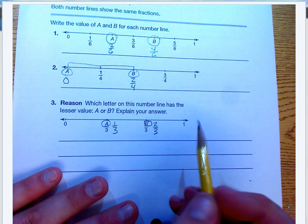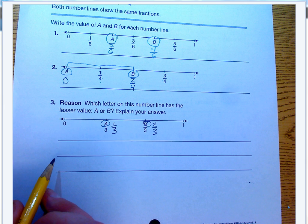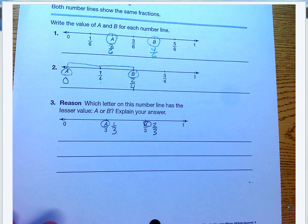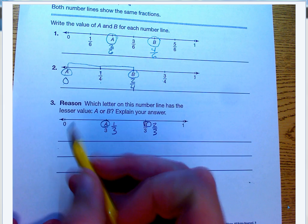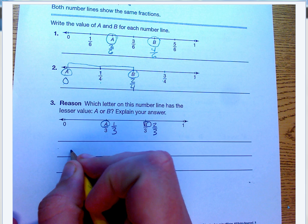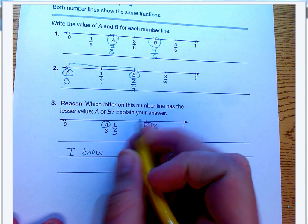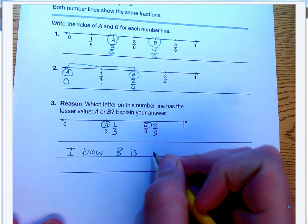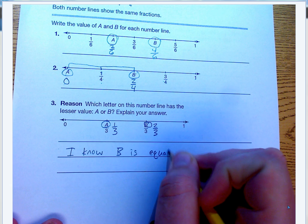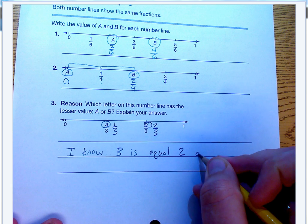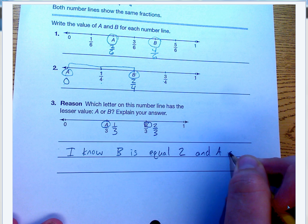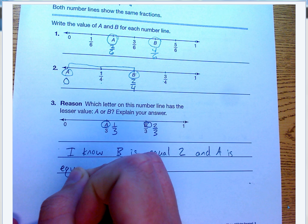So if I'm reasoning, I'm going to use my good math words, and I'm going to use a full sentence here. So I can say something like, I know B is equal to two, and A is equal to one. I know two is bigger than one, so B must be bigger.